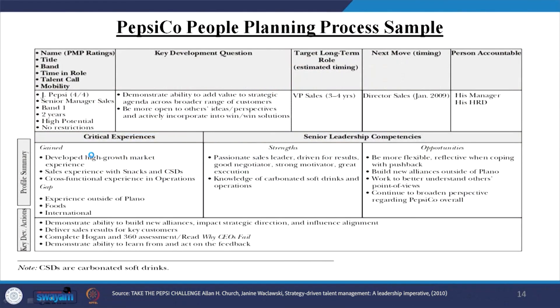In the model discussed earlier, looking at the example of the individual profile, there are critical experiences the person has had, certain strengths, and opportunities. Here you will find development actions, profile summary, name, title band, time in role, talent call, and mobility — all already mentioned.